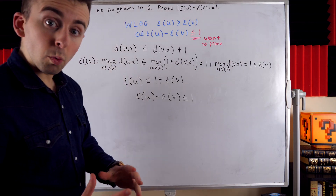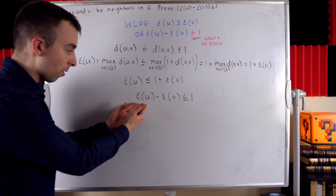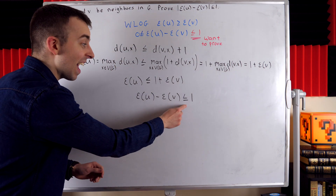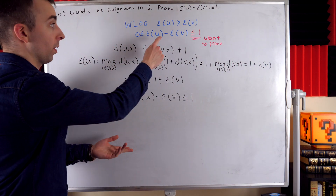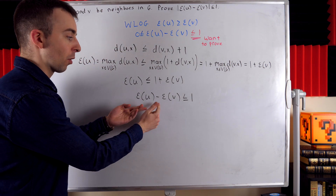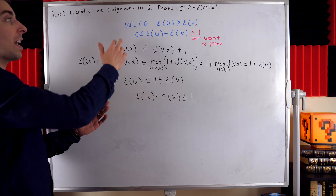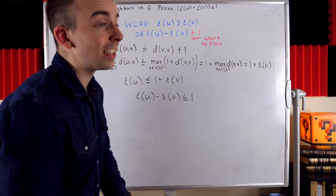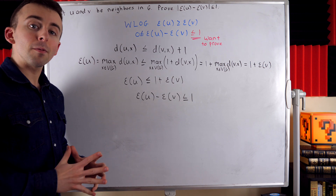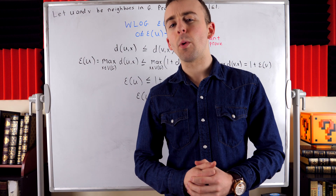And so we've just proven that for two adjacent vertices, the bigger eccentricity minus the smaller eccentricity is at most 1. And of course it's greater than or equal to 0, since it's the bigger one minus the smaller one. Thus, for two adjacent vertices, we know that their eccentricities differ by at most 1. Hope this was helpful, and thanks for watching.